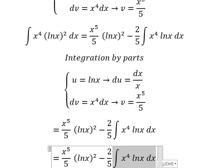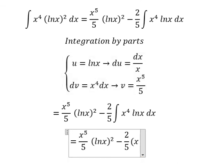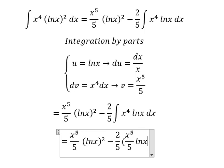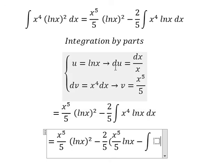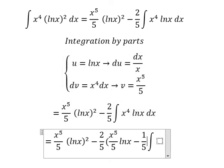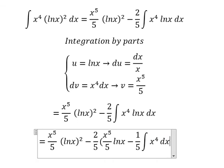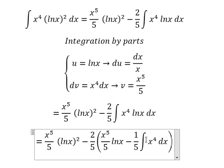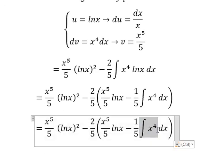The integration of this one, we have u multiplied by v minus we have the integration du multiplied by v. So we have 1 over 5 x to the power of 4 dx. So the integration of this one we have x to the power of 5 over 5.